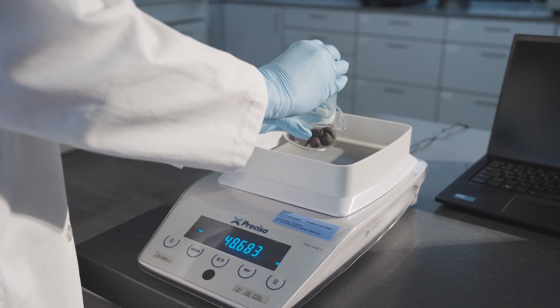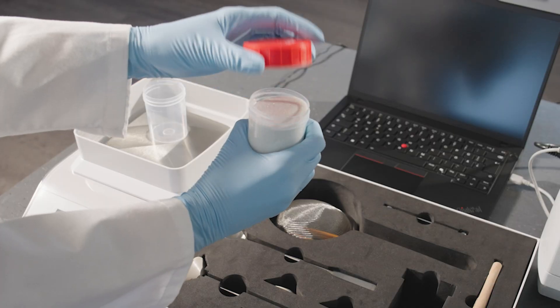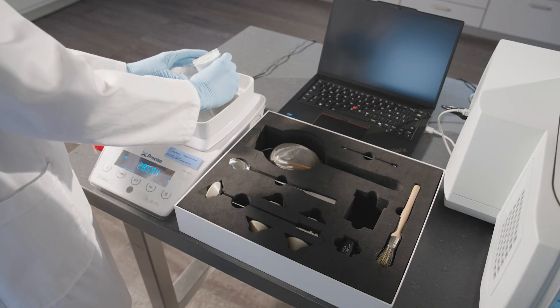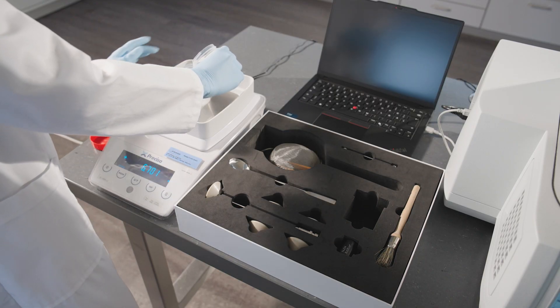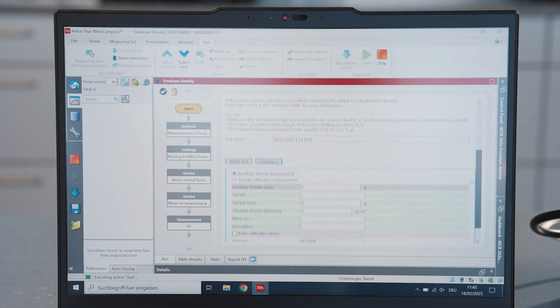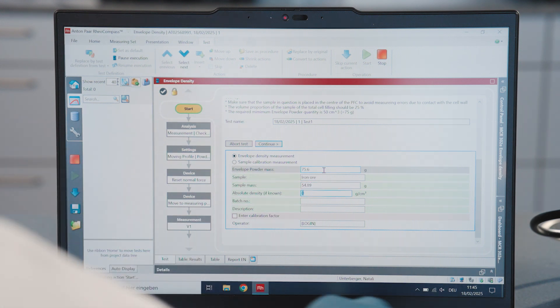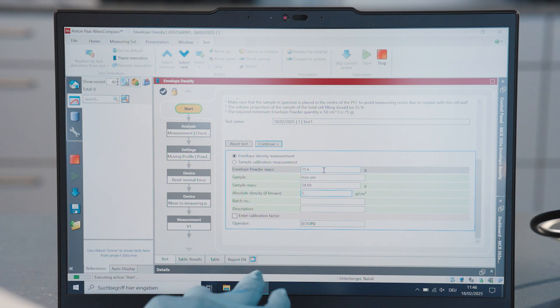Weigh sample and corresponding envelope powder mass. Enter sample and powder mass. Enter the absolute density value if the porosity is to be calculated.